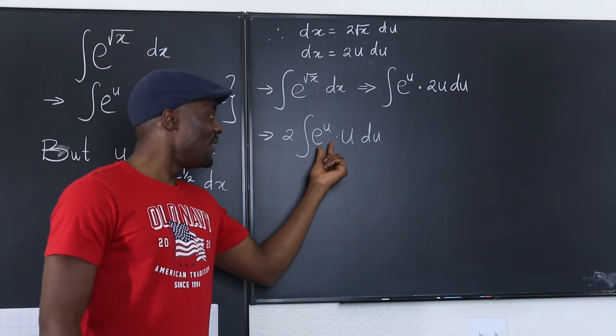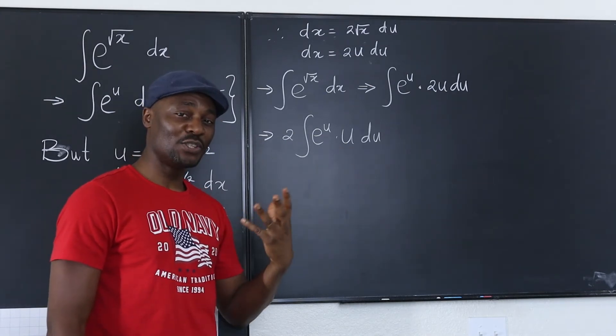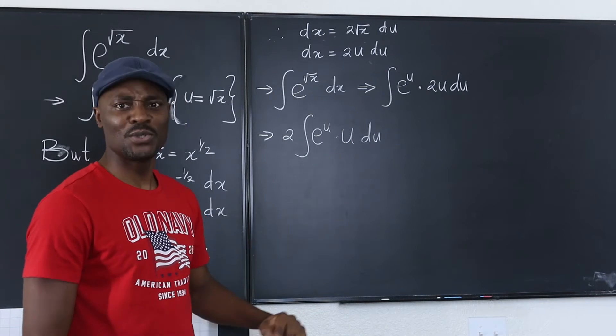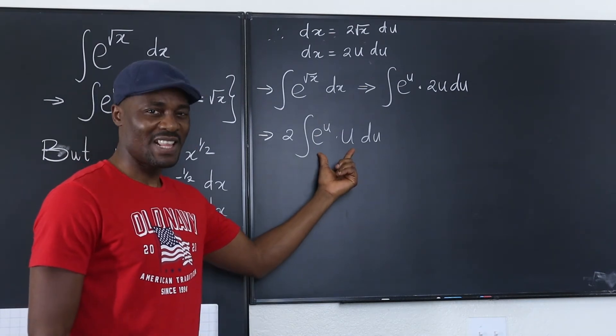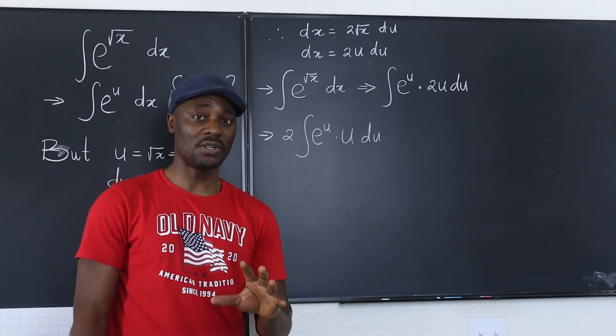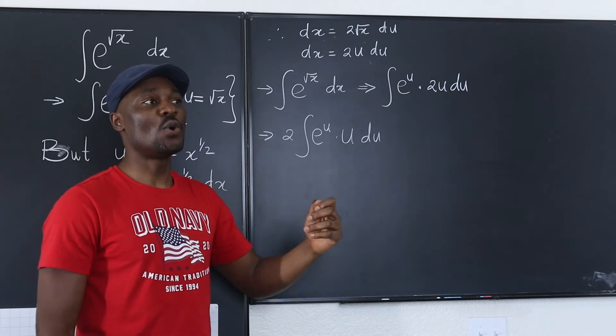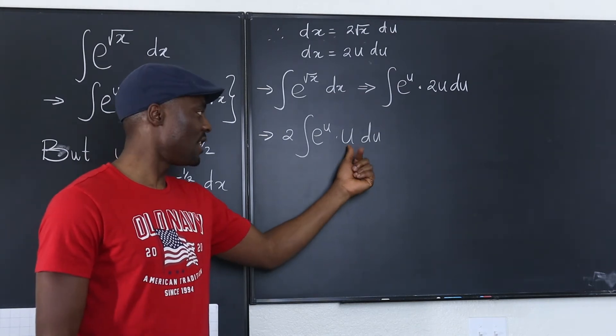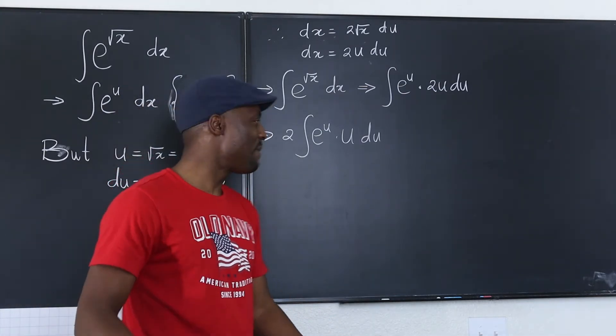Now you have this very simple product of two functions and you want to integrate them. That will lead you to integration by parts. When you find yourself with e to something and you have a polynomial function multiplying it, always take the polynomial function as your u so that when you differentiate it, it keeps tending towards zero. You differentiate a second time, you get zero and that's the end of your work.